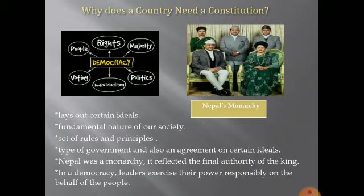It helps serve as a set of rules and principles that all persons in the country can agree upon as the basis of the way in which they want the country to be governed. This includes the type of government and also an agreement on certain ideals that they all believe the country should uphold. When Nepal was a monarchy, it reflected the final authority of the king. After transition of Nepal into a democracy, it started the process of writing a new constitution for the country.